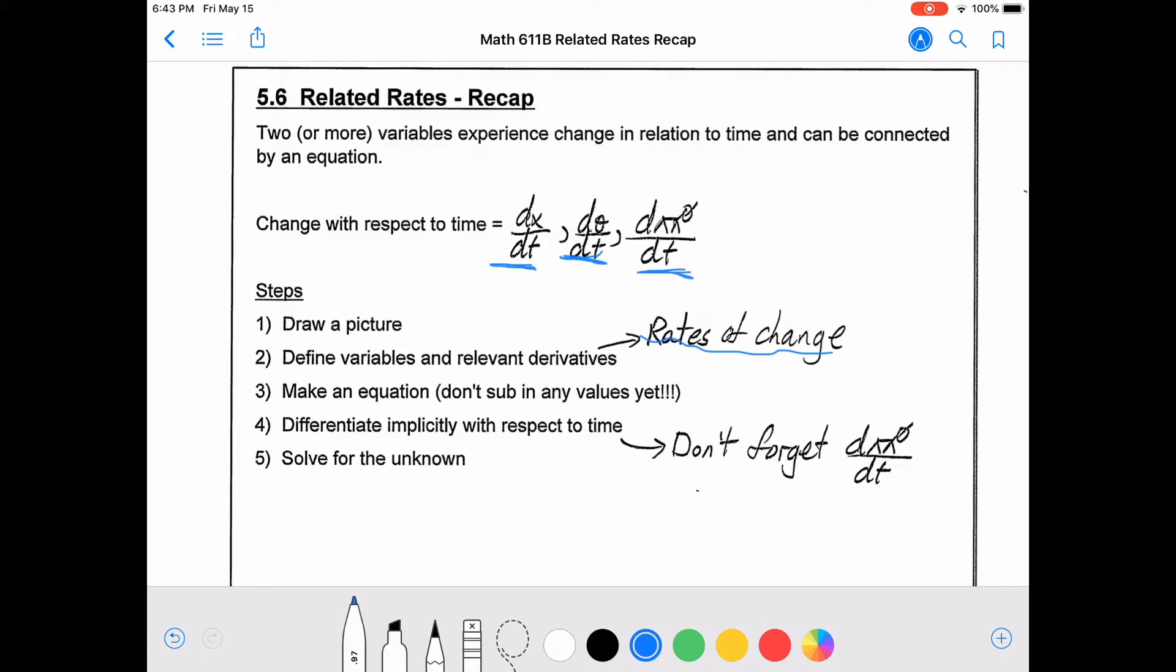Now just as a quick aside, for the don't sub in any values yet, there is an exception to that. If a quantity is not changing at all, meaning that its derivative is zero with respect to time, that's the case where you can sub in before you differentiate. But it's safest not to sub in any at all.